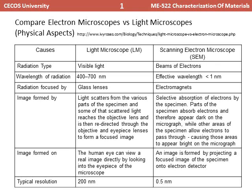If we look at the schematics of both instruments, there are some similar terminologies between them, such as condenser lens, objective lens, specimen, observer, detector, and source. In the light microscope, light is the source, whereas in the scanning electron microscope, as the name suggests, an electron gun is the source. However, the working principles are very different, and the advantages and disadvantages also differ significantly.